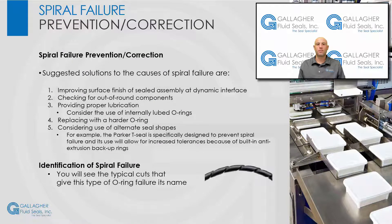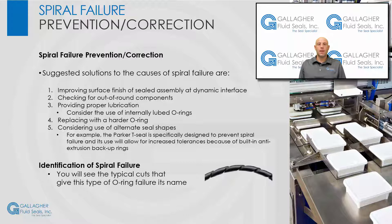How do you prevent or correct spiral failure? Suggested solutions include improving the surface finish of the sealed assembly at the dynamic interface such as the cylinder bore or piston rod, checking for out of round components especially cylinder bores, providing proper lubrication and possibly considering the use of internally lubed O-rings, replacing the current O-ring with a harder O-ring material, and considering alternate seal shapes. For example, a T-seal is specifically designed to prevent spiral failure and its use will allow for increased tolerances because of built-in anti-extrusion backup rings.